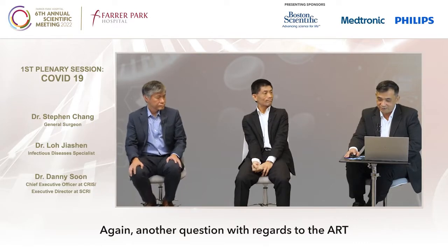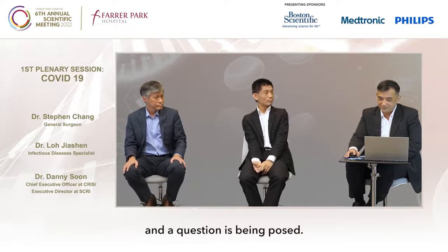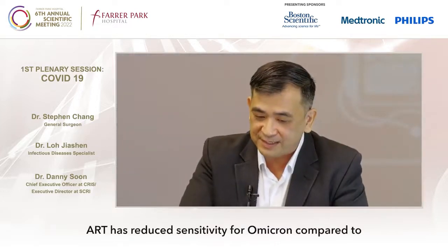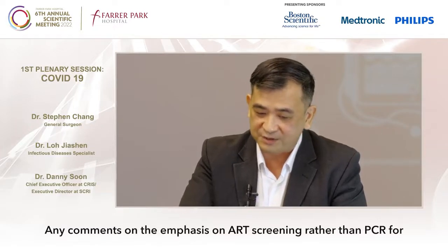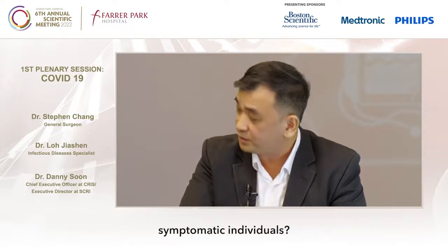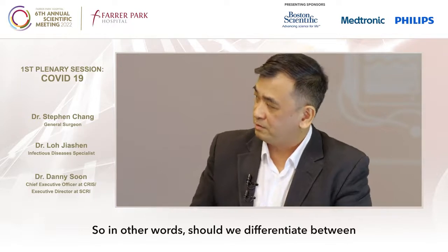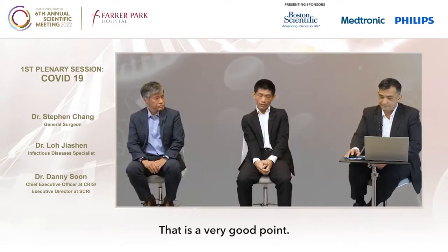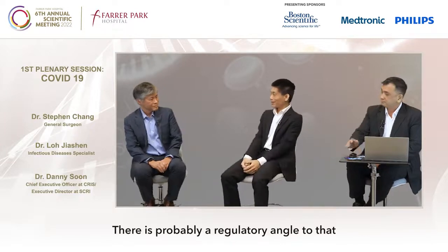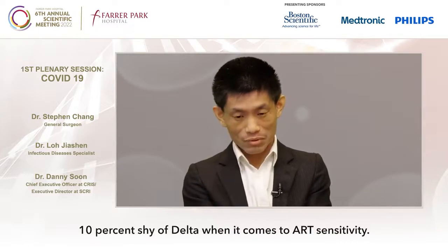Another question regards the ART: ART has reduced sensitivity for Omicron compared to the Delta variant — slightly, yes. Any comments on the emphasis on ART screening rather than PCR for symptomatic individuals? In other words, should we differentiate between asymptomatic and symptomatic — symptomatic perhaps can use the ART, asymptomatic perhaps PCR, or vice versa? That is a very good point. There's probably a regulatory angle to that.